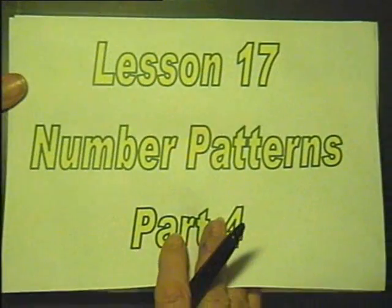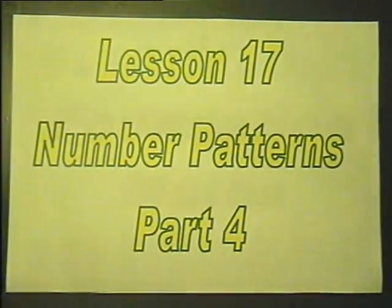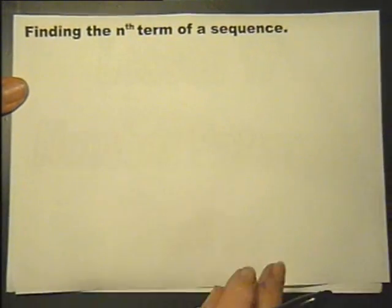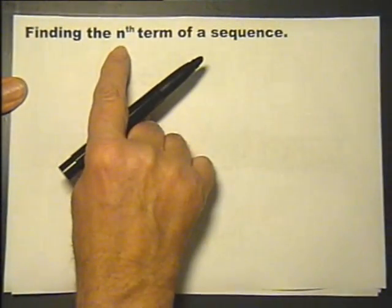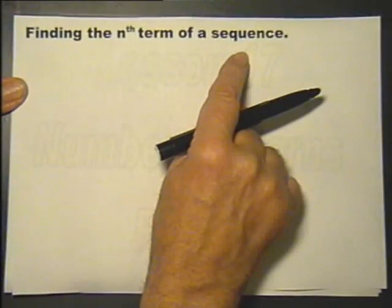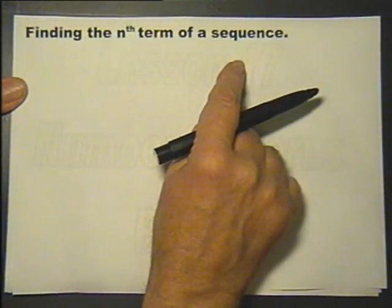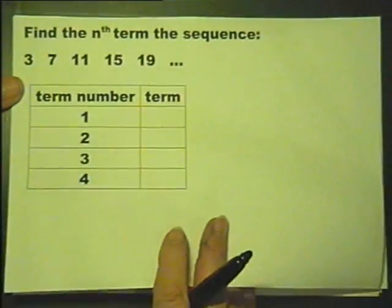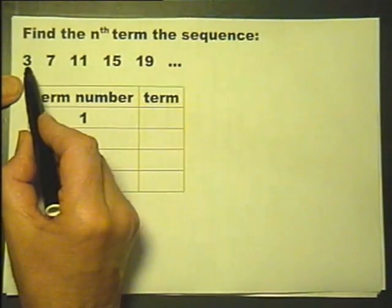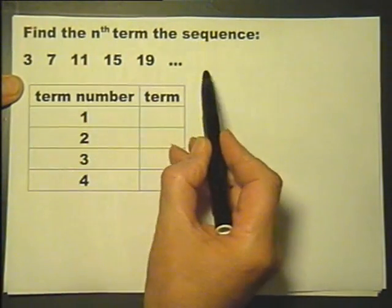Foundation Maths, Lesson 17, Part 4. We're going to be trying to find the nth term of a sequence. In other words, a formula to work out any term in a sequence. So let's try and find a formula to work out any term in this sequence.